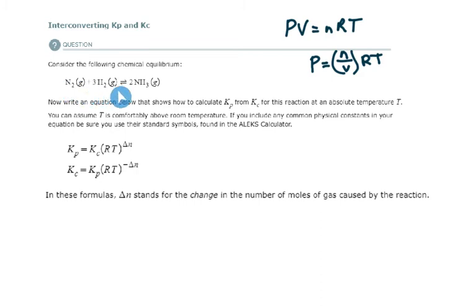You just need to have the chemical reaction equation here so that you can count delta n, the change in moles. In these formulas, delta n stands for the change in the number of moles, but moles of what? Of gas caused by the reaction.